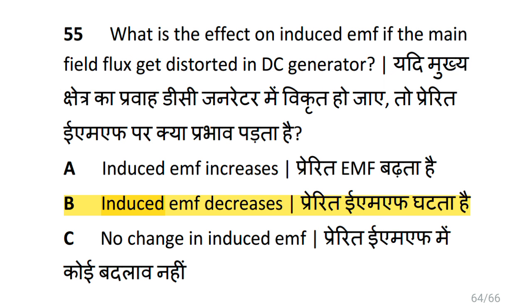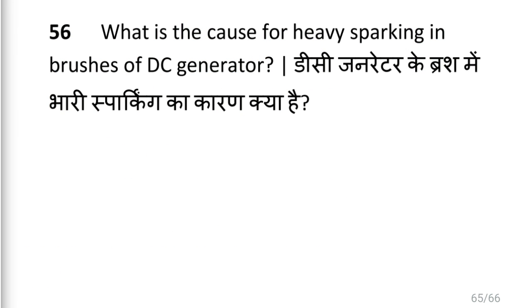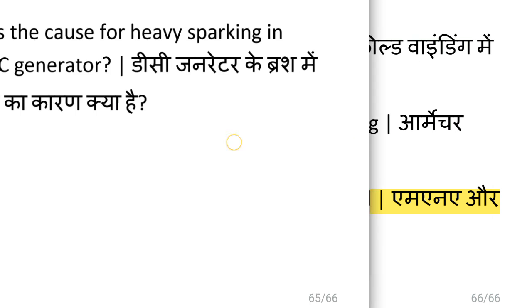What is the effect on induced EMF if the main flux field gets distorted in a DC generator? That is induced EMF decreases. What is the cause for heavy sparking in brushes of DC generator? That is the MNA and GNA positions have changed.